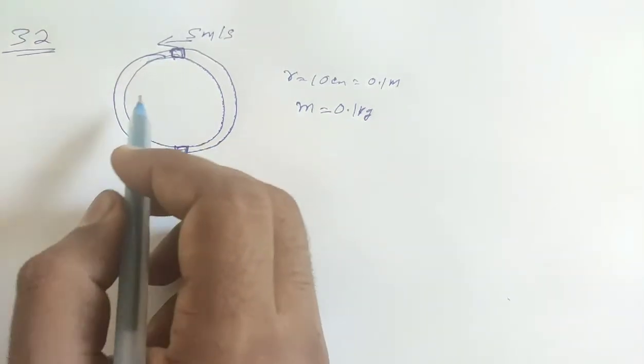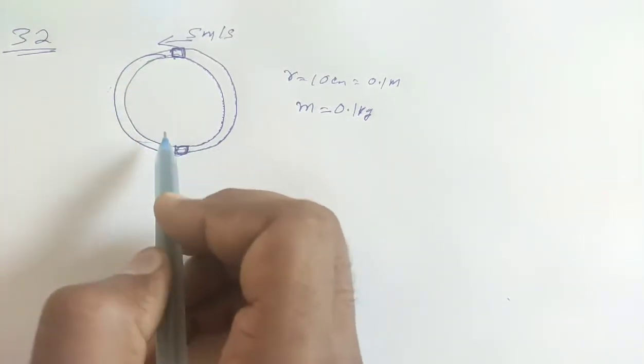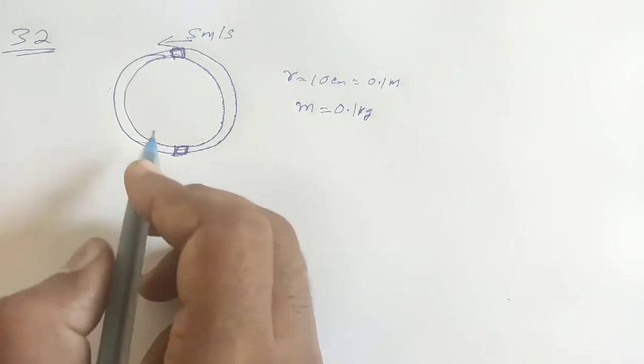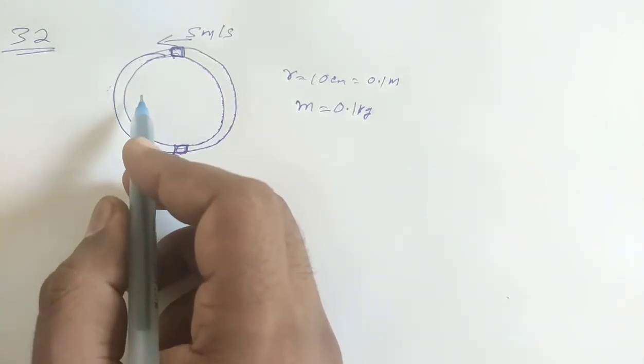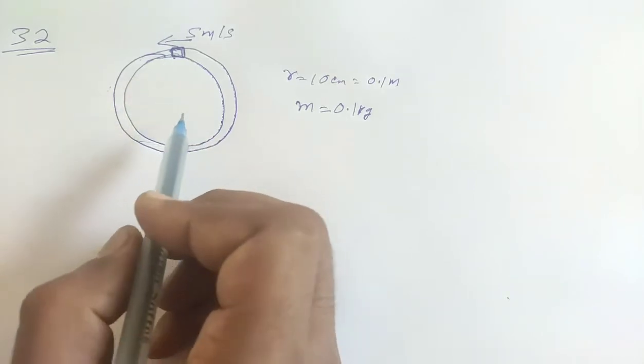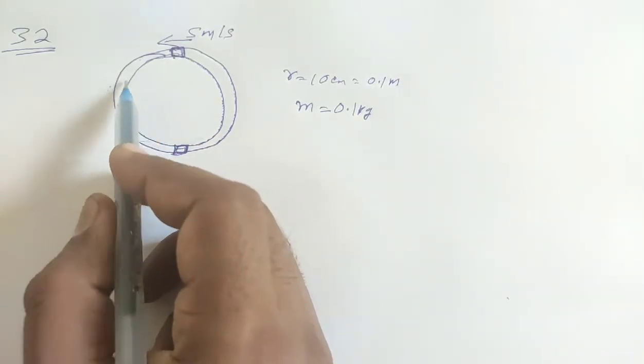When the block moves in the vertical plane, what forces do work? Work is due to gravity and friction due to the tube. The work done by friction is negative because it opposes motion.